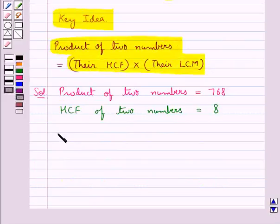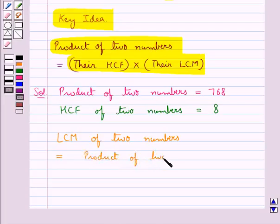we find that the LCM of the given two numbers is equal to the product of the two numbers divided by the HCF of two numbers.